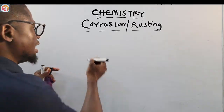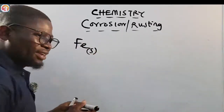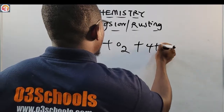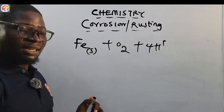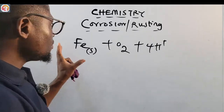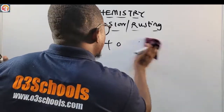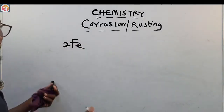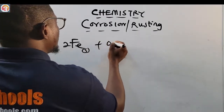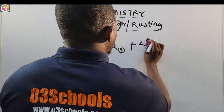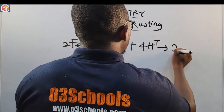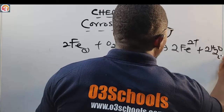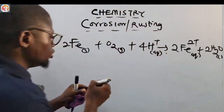Let us use a reaction to explain rust. First, iron (Fe, solid) reacts with oxygen (O2, gas) and 4 hydrogen ions to give 2 Fe²⁺ ions plus 2 H2O. This is the first reaction — iron reacting with oxygen and 4 hydrogen ions to form iron(II) ions and water.